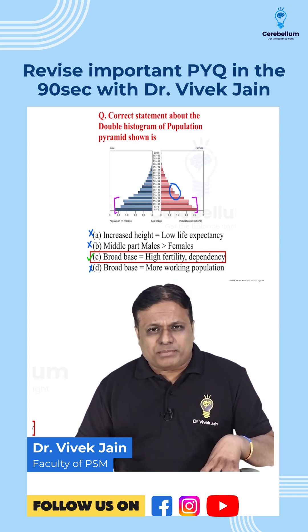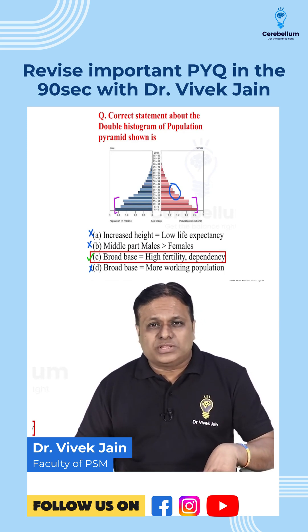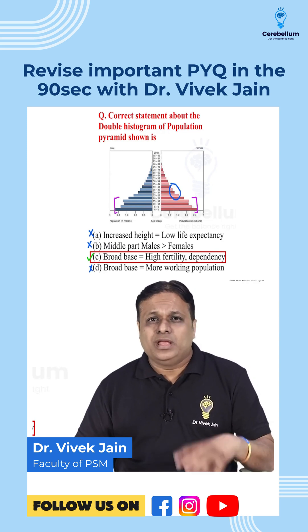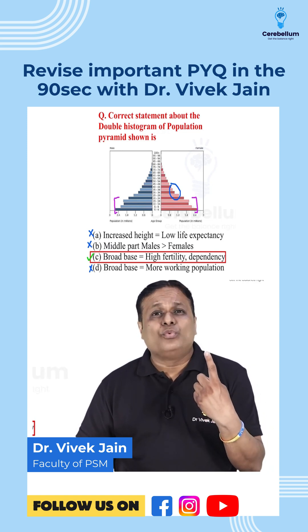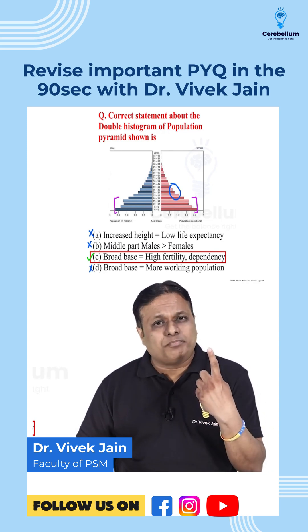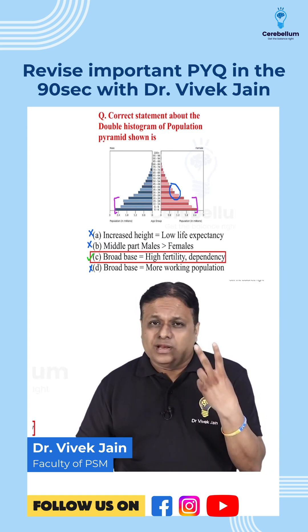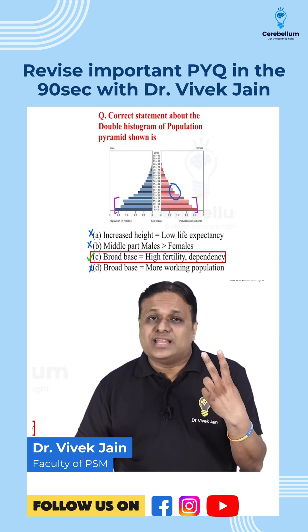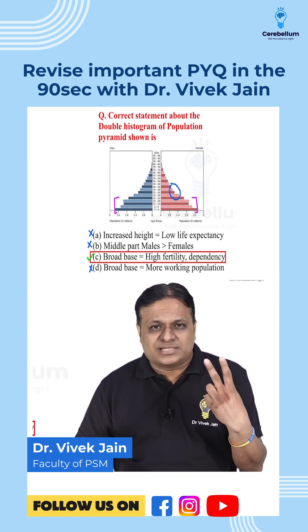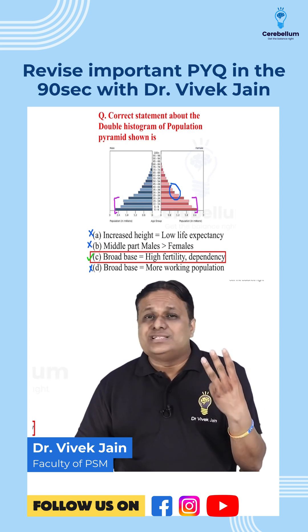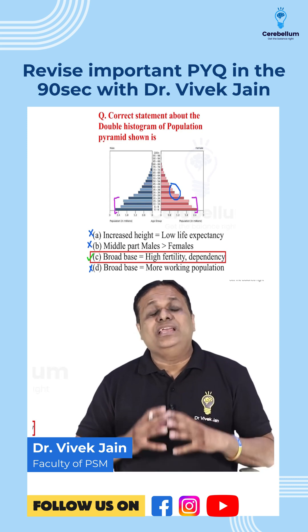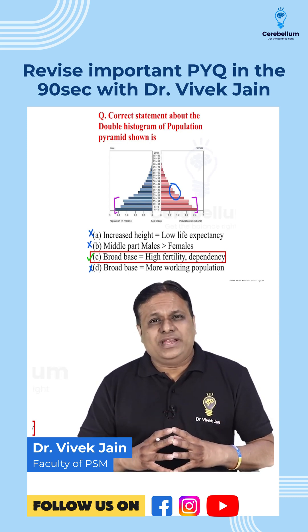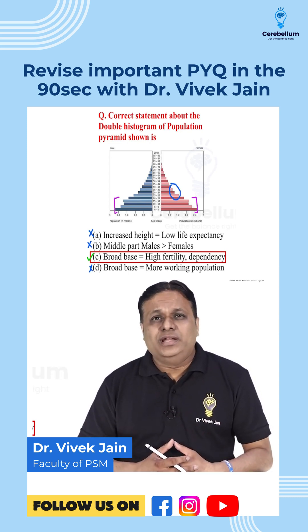Three things you must remember about the population or age-sex pyramid. Number one: shape is fertility pattern. Number two: span or height is life expectancy. And third: symmetry represents the sex ratio, whether it is favorable or not.